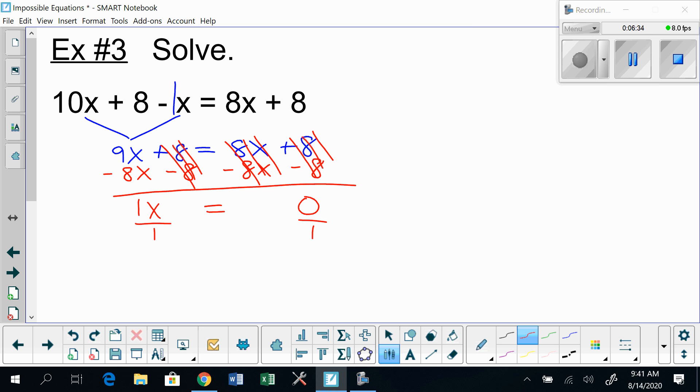And believe it or not, this equation is still solvable. As long as my linear terms still exist, which it does here, this equation is still solvable. So this equation actually does have a solution. There's only one solution that it has, and that solution is 0. Zero is the only number that you can plug in for x here that will make this equation true. So this equation is solvable. It does have a solution. The solution is 0.